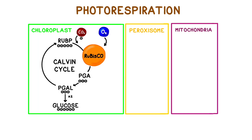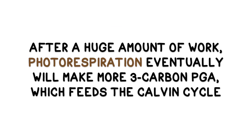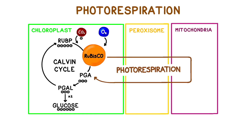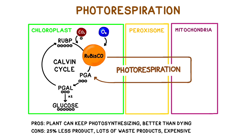The details of all the reactions are outside the scope of this video, and there are about an additional dozen steps not shown here, but the idea is that the plant is able to use two additional organelles—peroxisomes and mitochondria—to generate three-carbon PGA. That new PGA can be fed into the Calvin cycle to keep it going. This process does allow the plant to keep photosynthesizing, but it's maddeningly inefficient compared to the regular Calvin cycle. Even under the best of conditions, it produces 25% less product, creates a lot more waste in the form of hydrogen peroxide and ammonia, and it's also energy inefficient because it costs ATP.